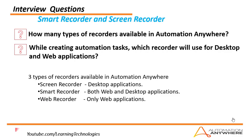Now let's go over interview questions on Smart Recorder and Screen Recorder. In interviews, many people are asked: how many types of recorders are available in Automation Anywhere? Or which recorder is used for desktop and web applications? The answer is: there are three types — Smart Recorder, Screen Recorder, and Web Recorder. Smart Recorder works for both web and desktop applications. Screen Recorder is for desktop applications only. Web Recorder is for web related applications only.